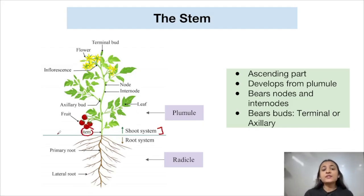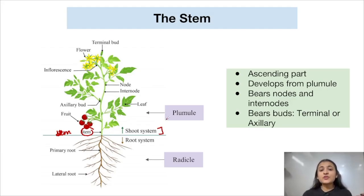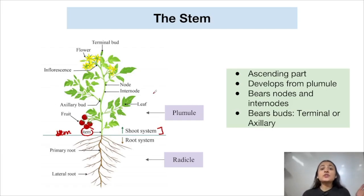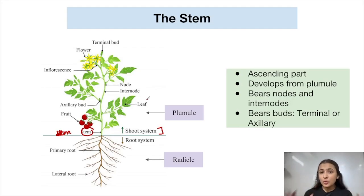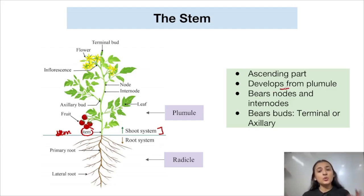The shoot system develops from the plumule part of the embryo. This means the stem, which is also a part of the shoot system, is ultimately formed from the plumule part of the embryo. That is why we say that stem also develops from the plumule.